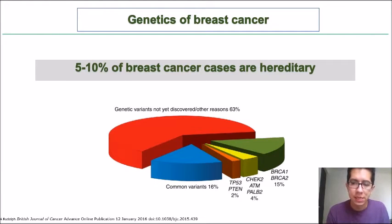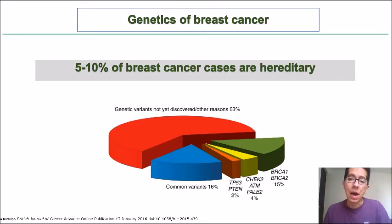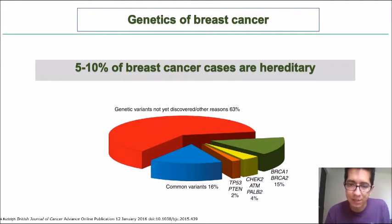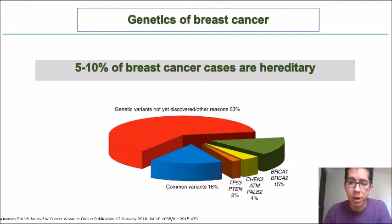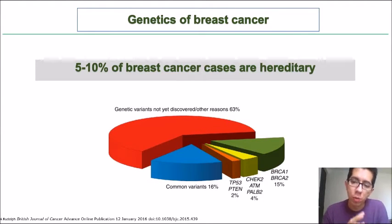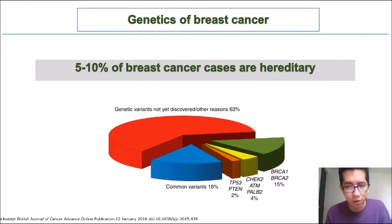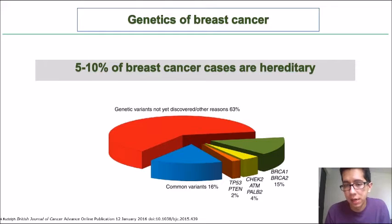Breast cancer is a complex disease, meaning that both environmental and genetic factors contribute to its development. Around 5 to 10 percent of breast cancer cases are hereditary, due to germline mutations in genes such as BRCA1 and BRCA2, but also other genes involved in cell cycle and double-strand DNA repair such as CHECK2, ATM, and PALB2. More than 50 percent of breast cancer cases are due to variants not yet discovered or epigenetic changes in DNA methylation.